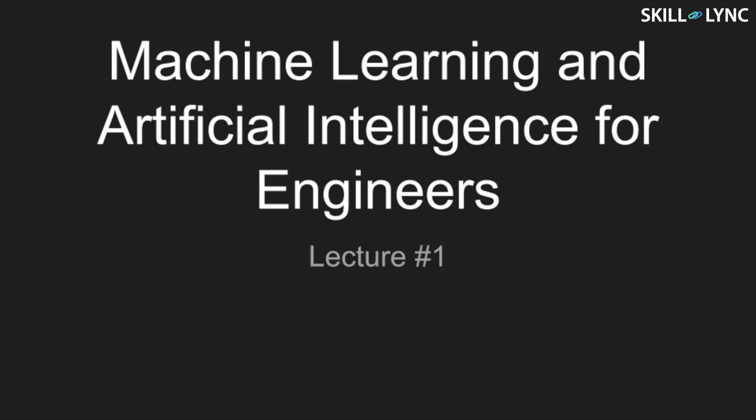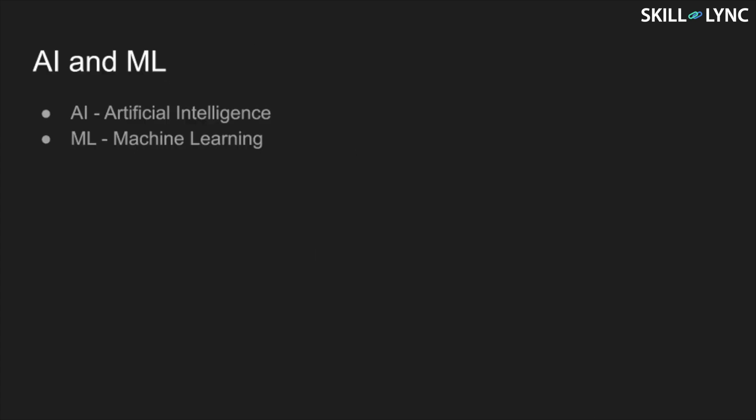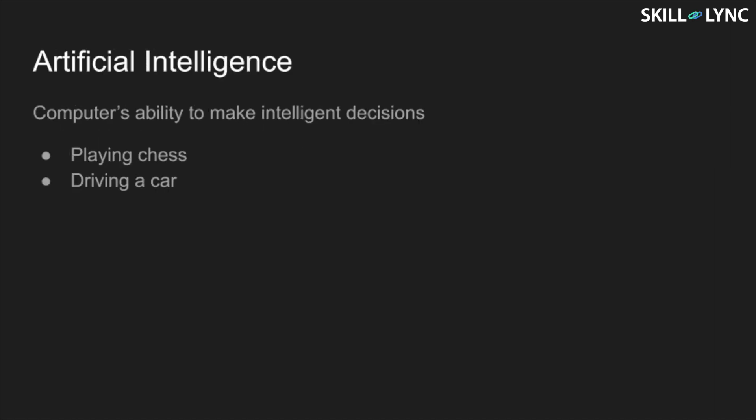As you might already know, AI stands for Artificial Intelligence and ML stands for Machine Learning. Artificial Intelligence describes a computer's ability to make decisions like human beings. An example would be a computer that can play a game of chess.